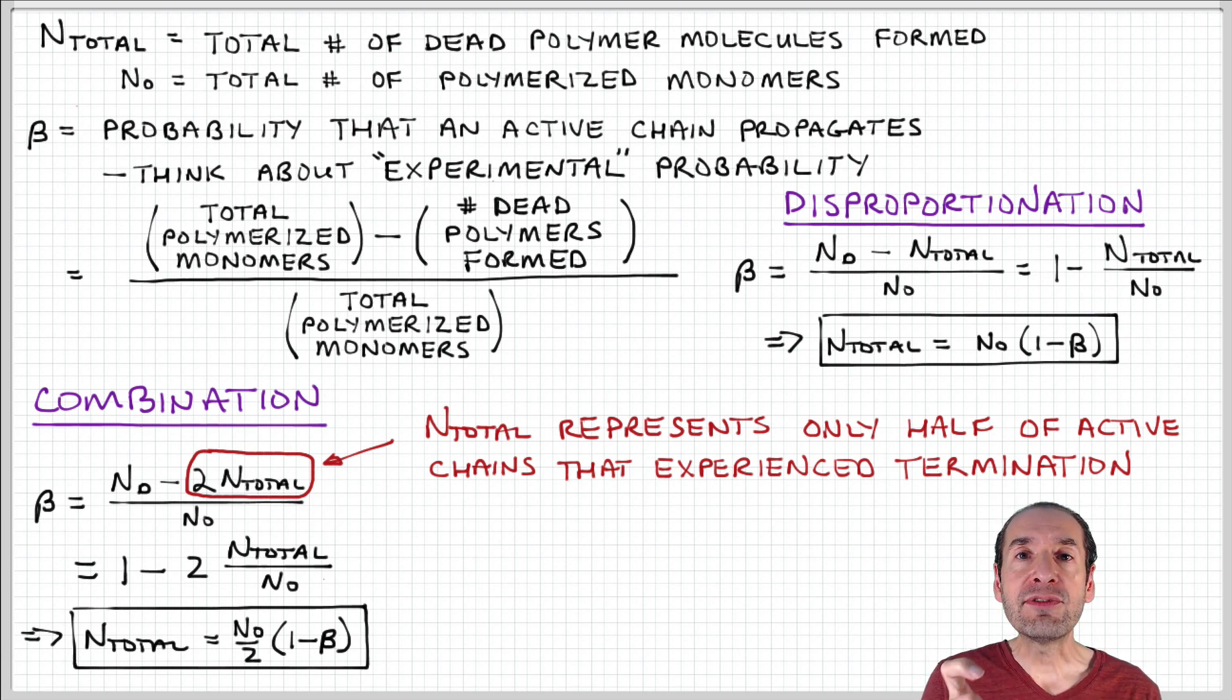In other words, two active chains were consumed or experienced termination to form one dead polymer. So if we're counting termination events, then we need to use twice the number of dead polymers in our sample to accurately represent the number of termination events. That's the key point that we have to consider for combination termination.